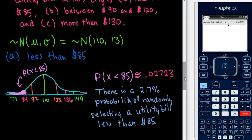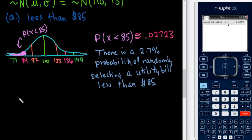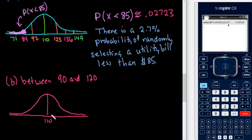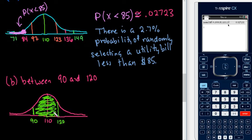For the second part, we're looking for the probability of a bill between $90 and $120. Drawing a rough sketch, the model is still centered at $110. The value $90 falls between $84 and $97, a little more than one standard deviation below, and $120 is almost one standard deviation above. We're looking for the area between these two values, which appears to be a large area — likely more than 50%, since the range from negative one to positive one standard deviation already covers 68%.